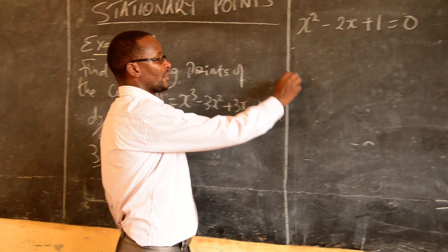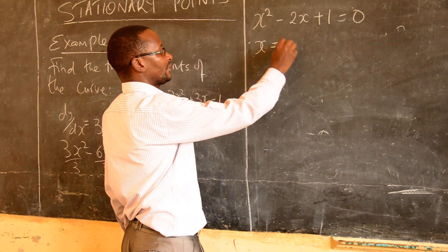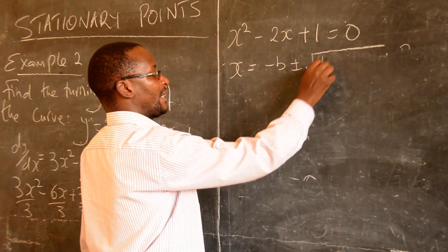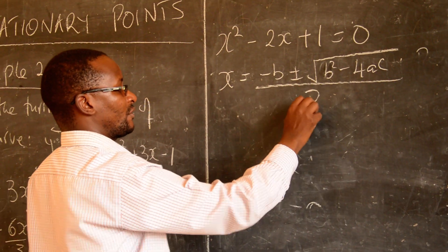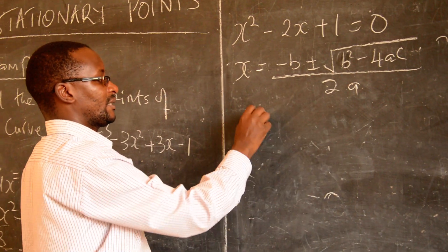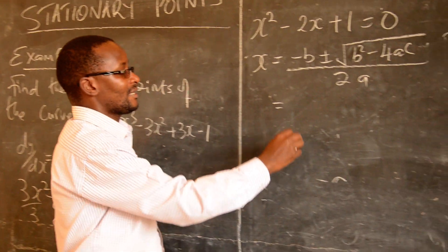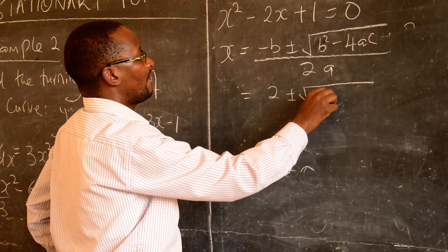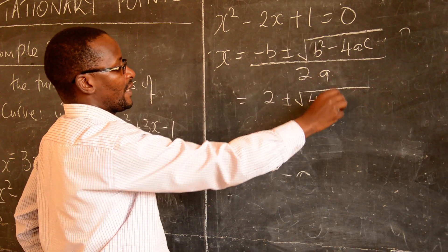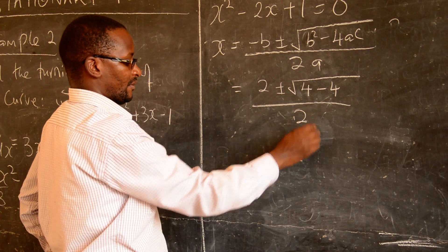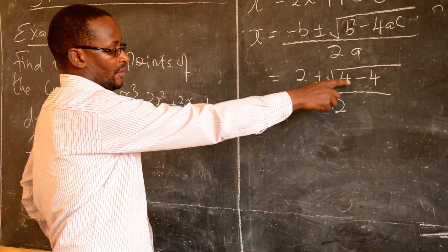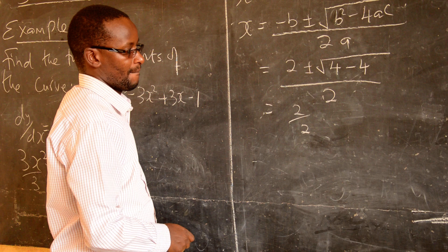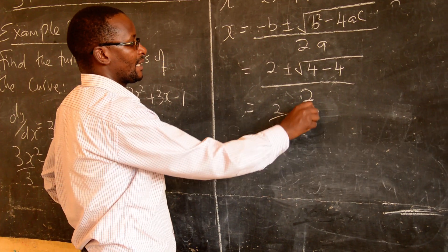Let's solve that using the quadratic formula. x equals minus b plus or minus square root of b squared minus 4ac, all over 2a. So we get x equals 2 plus or minus square root of 4 minus 4, which is zero, divided by 2. So this will be zero, and our answer is 2 over 2. So the turning point x-value is 1.